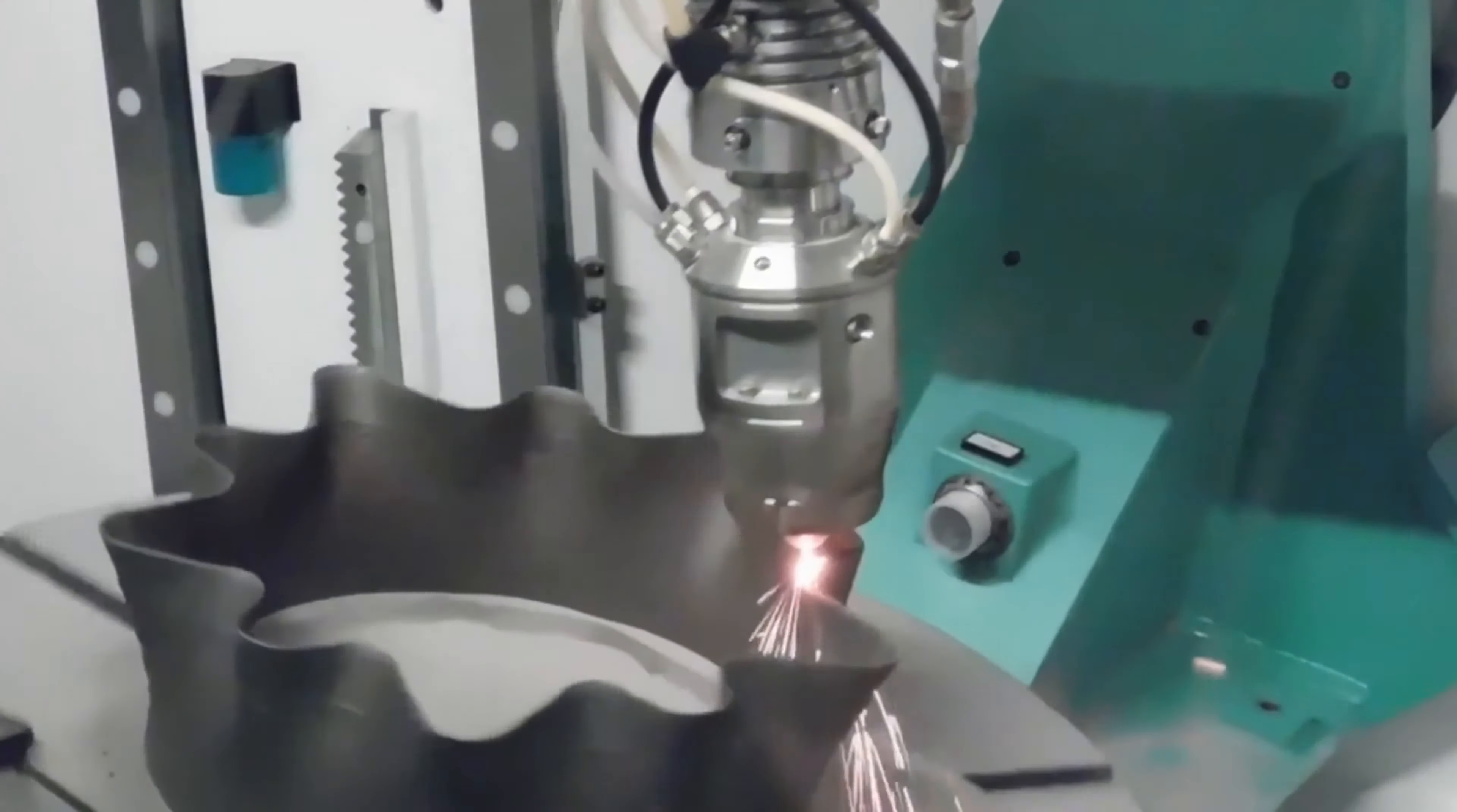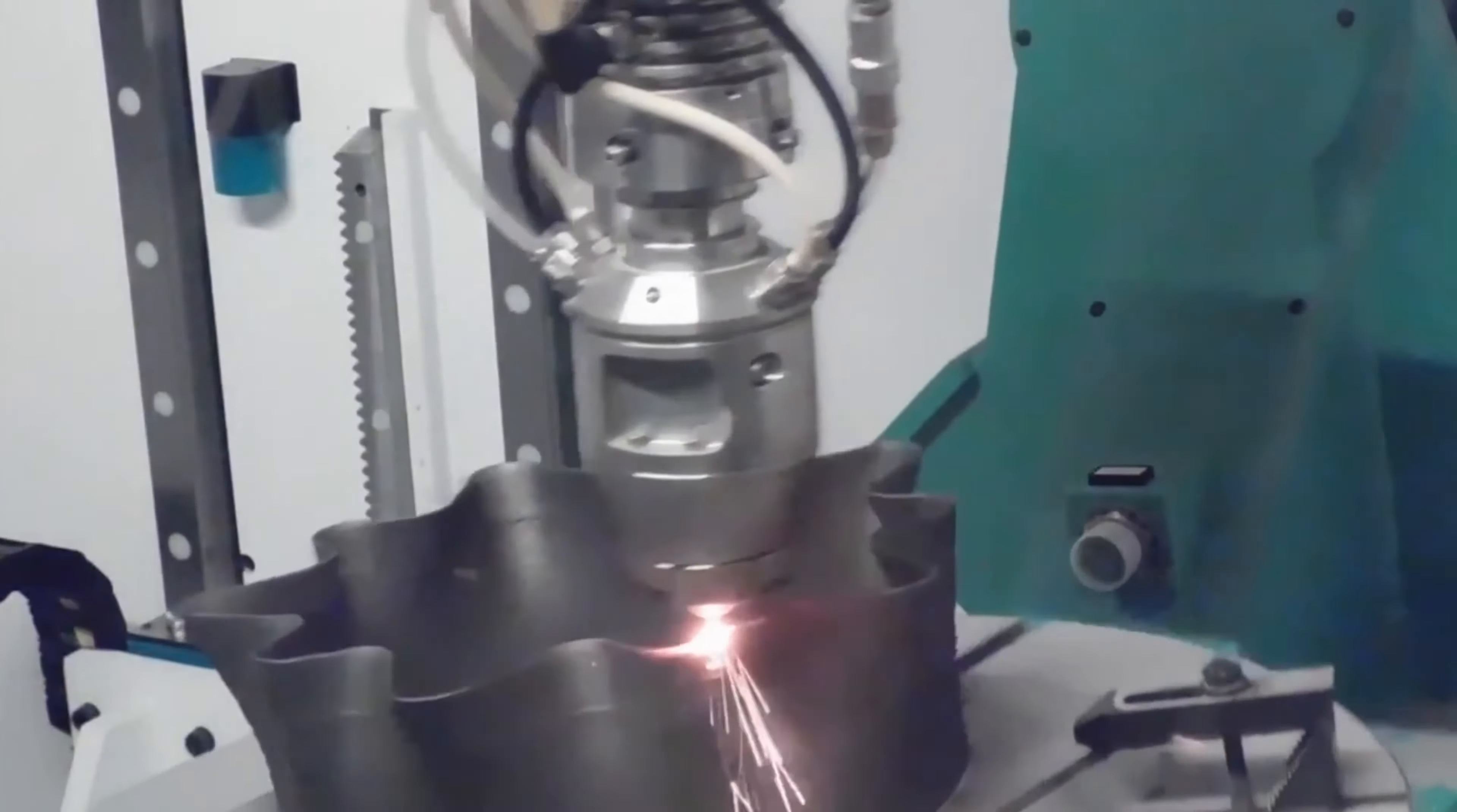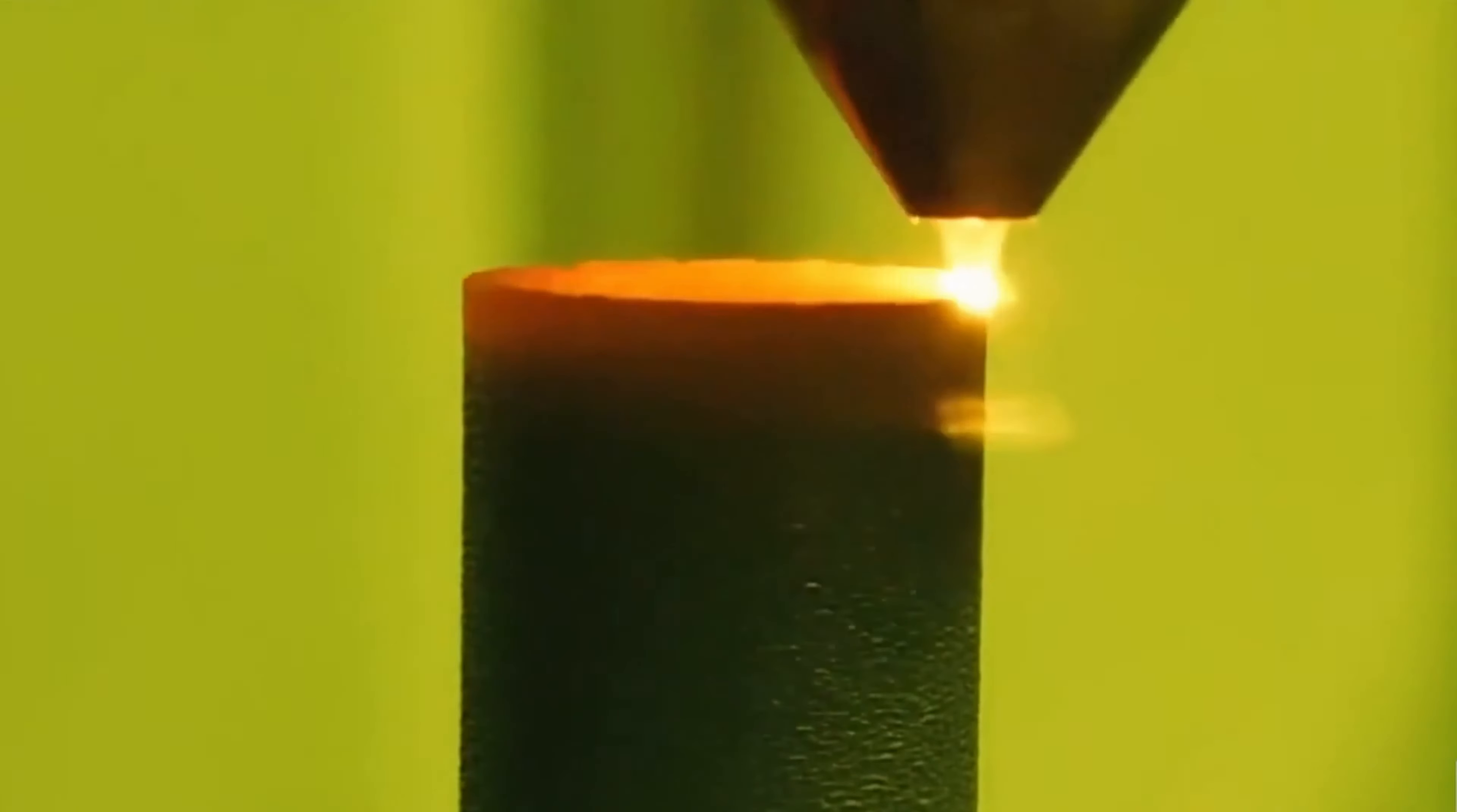But not all are advantages with this type of 3D printed metal parts. Some of the cons that we can find are that production builds can consist of thousands or tens of thousands of layers and can take days or even weeks to complete.